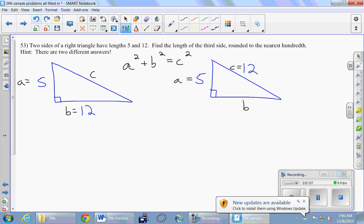You can see that the unknowns are different. In the first triangle the unknown is the c, and in the second triangle the unknown is the b.